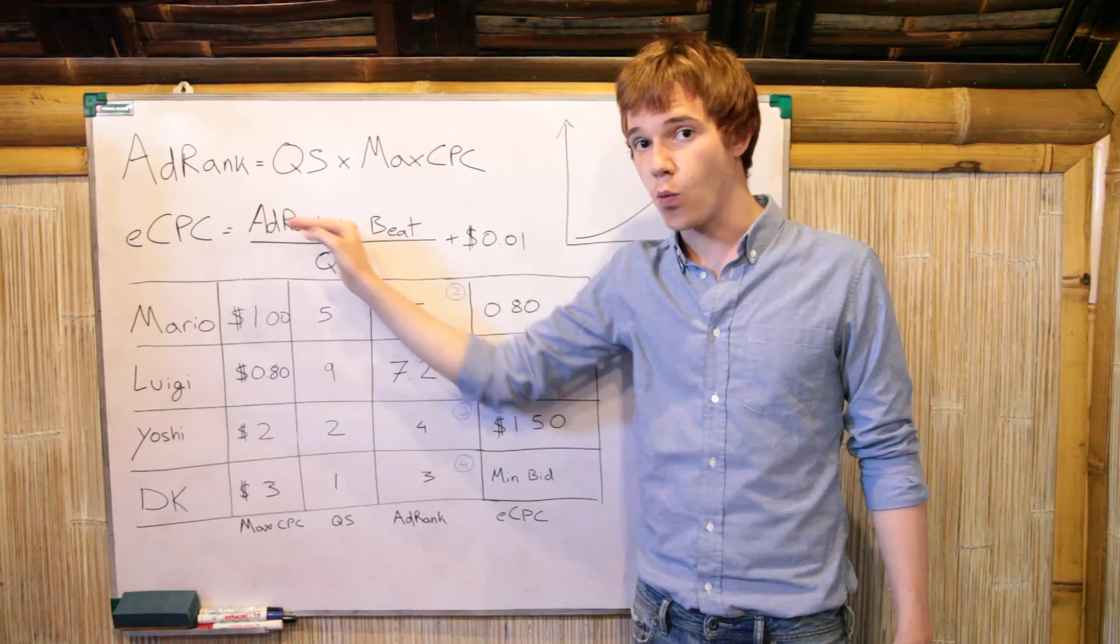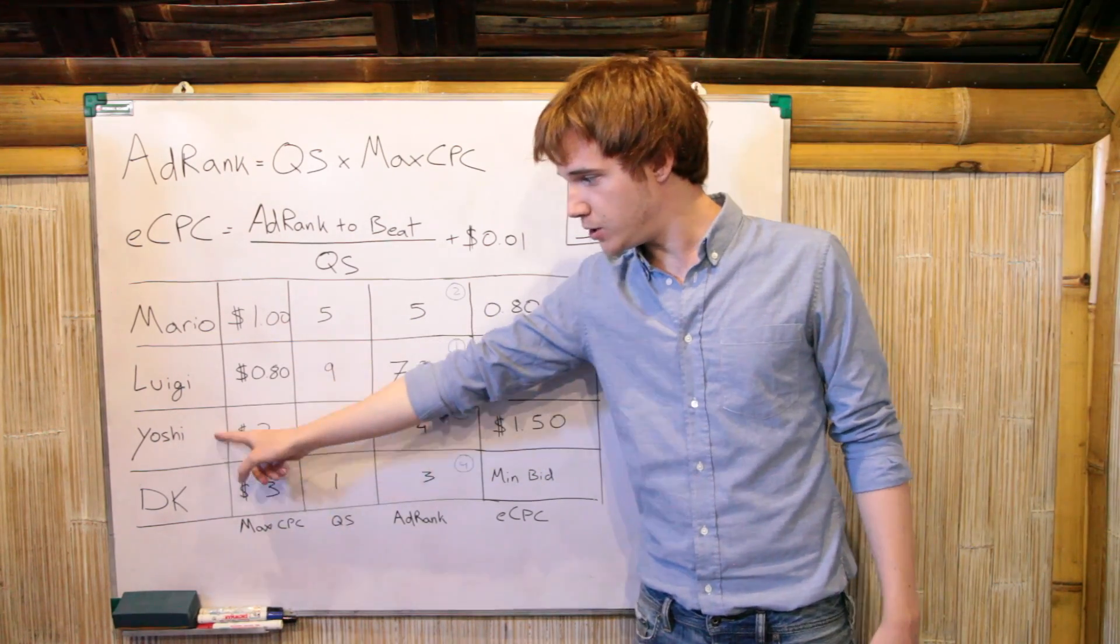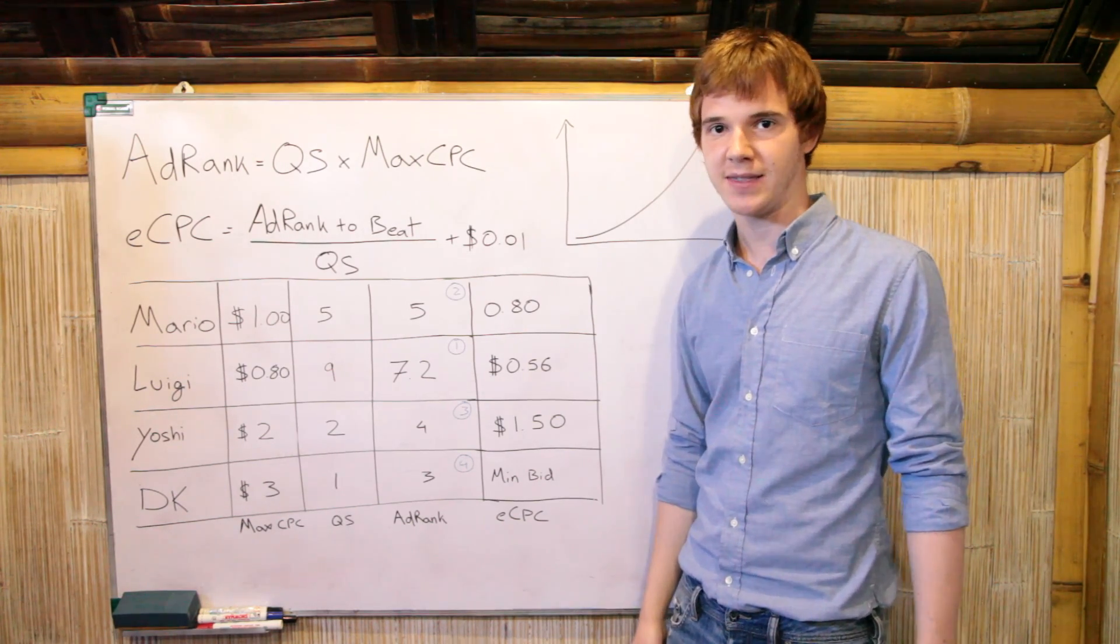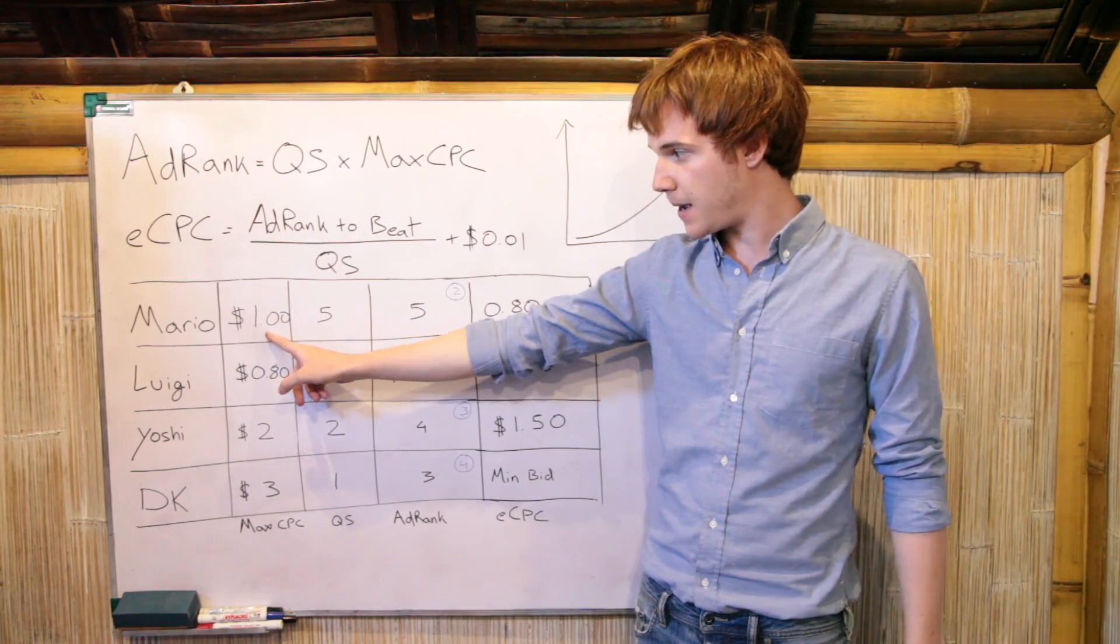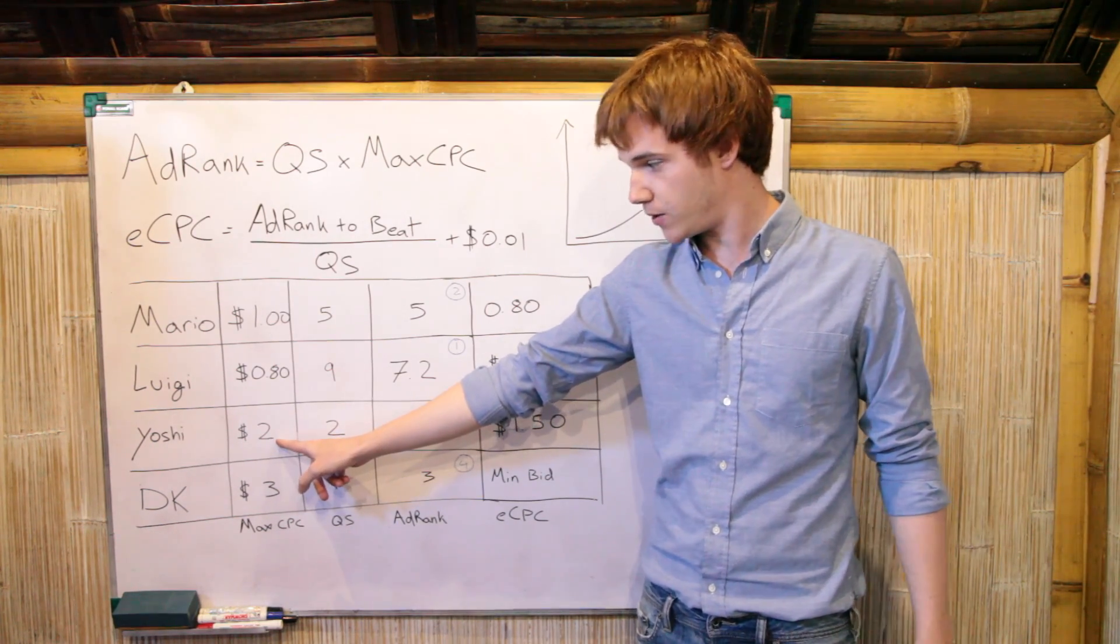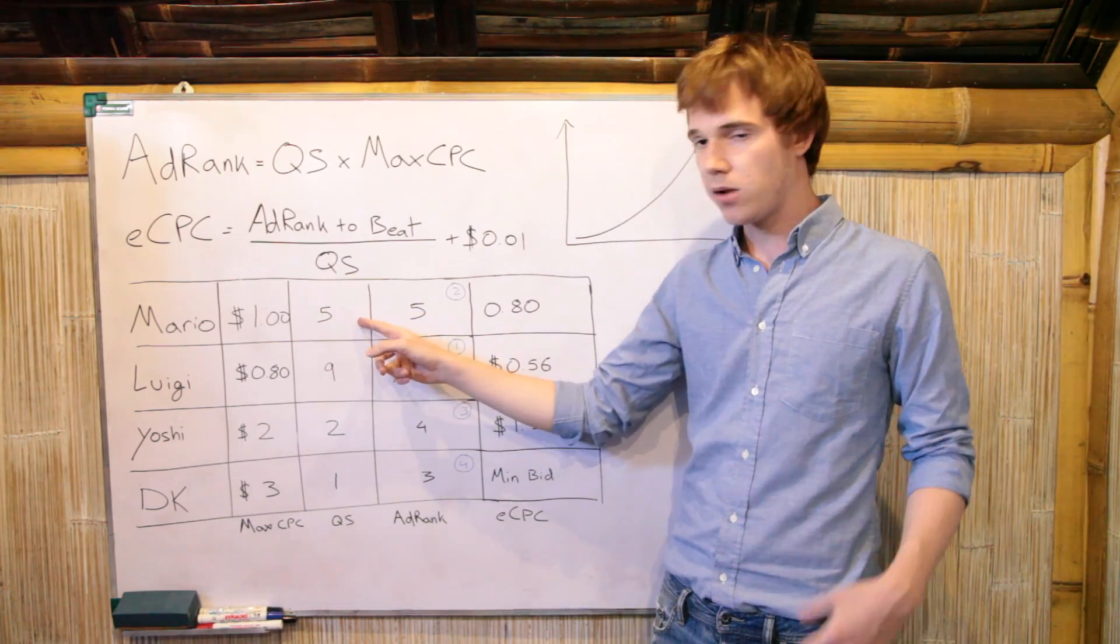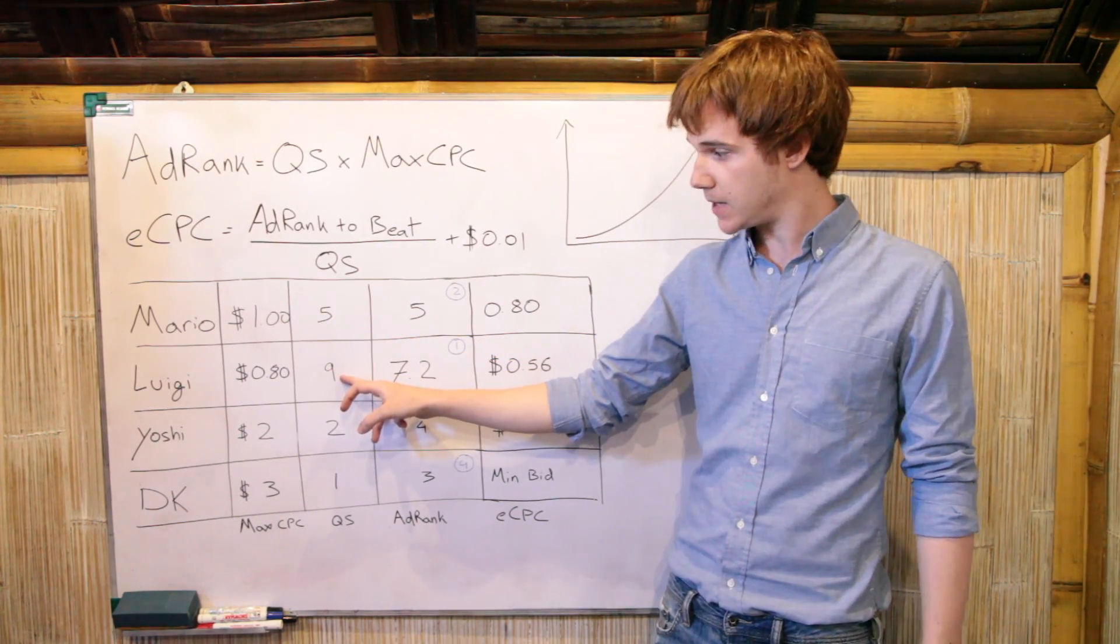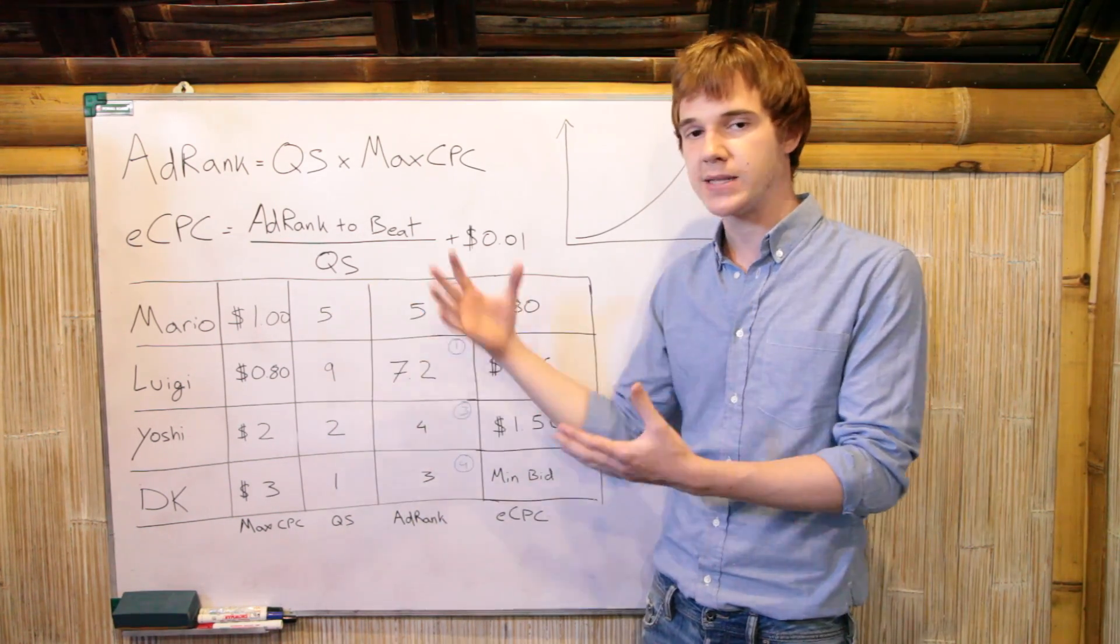So here's an example right here, where I have Mario, Luigi, Yoshi, and Donkey Kong, who all want to bid on Super Mario Brothers. That's the keyword that they want to bid for. And they all have different bids. They're all willing to pay different amounts. So Mario's willing to pay a dollar. Luigi's willing to pay 80 cents. Yoshi is crazy and rich, so he wants to pay $2. And Donkey Kong just doesn't know what he's doing, so he's going to pay $3. So they all are willing to pay different amounts. And they're all more or less good at AdWords. So Mario's pretty good, he's 5 out of 10. Luigi's really good, so he's got 9. Yoshi and Donkey Kong, not so much, 2 and 1.